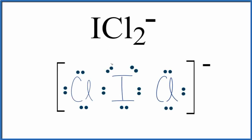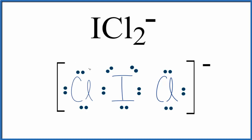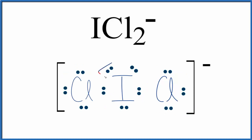Let's take a look at the molecular geometry, bond angles, and electron geometry for ICl₂⁻. So we'll start with a valid Lewis structure. This is our Lewis structure, and you'll notice we have 2 chlorine atoms and 3 lone pairs.